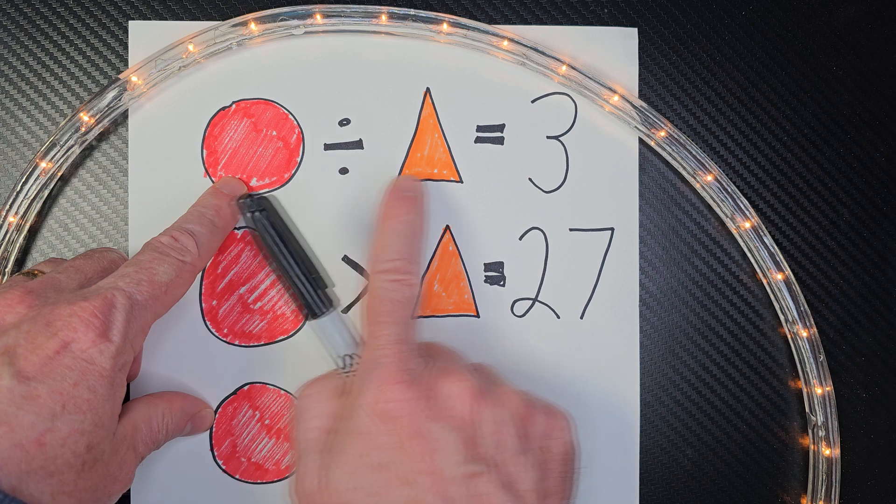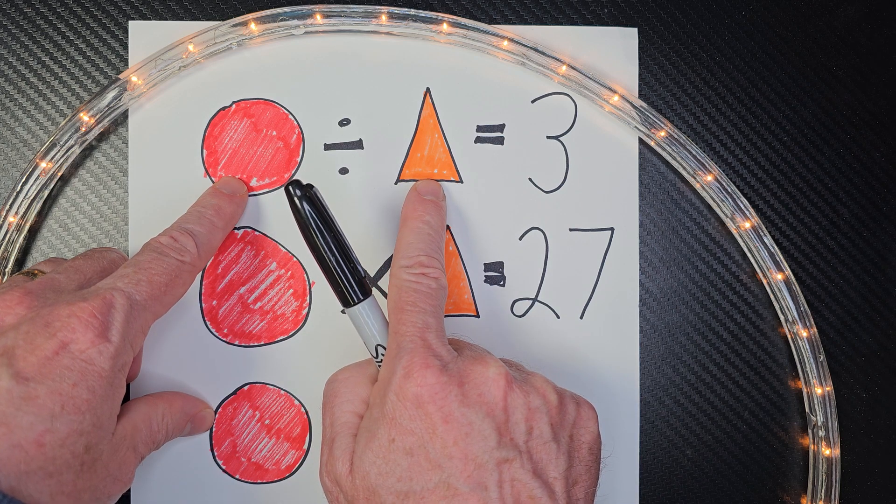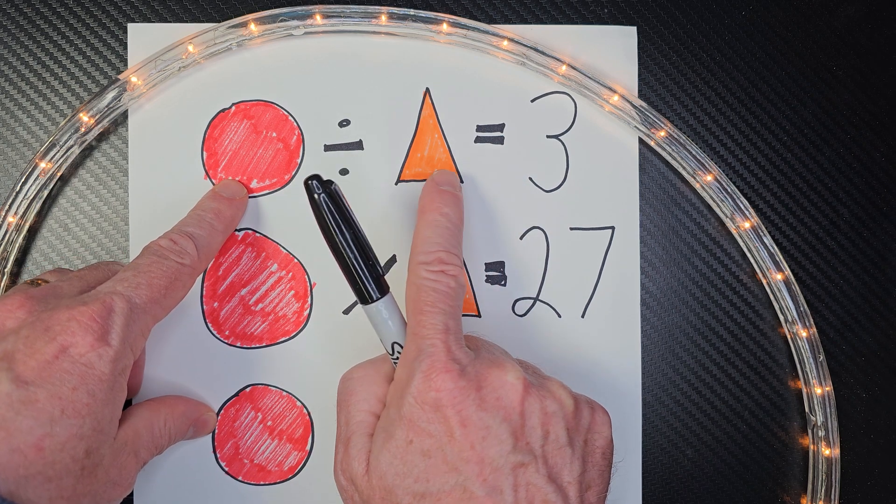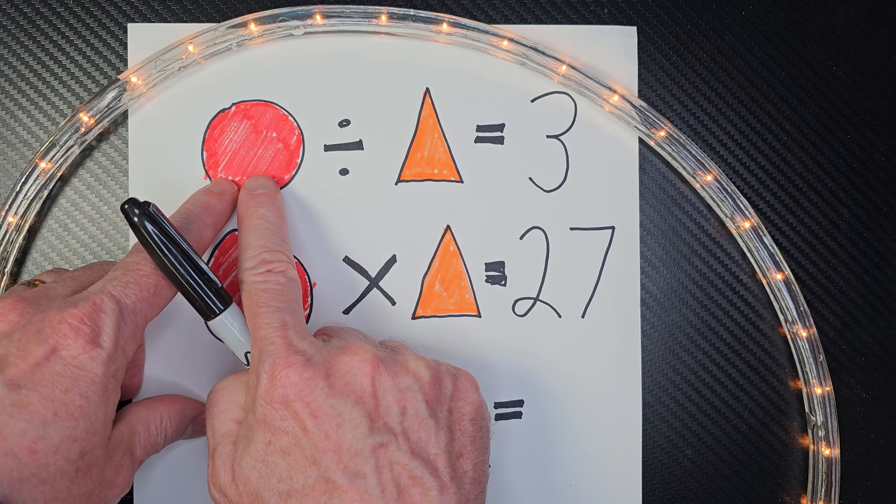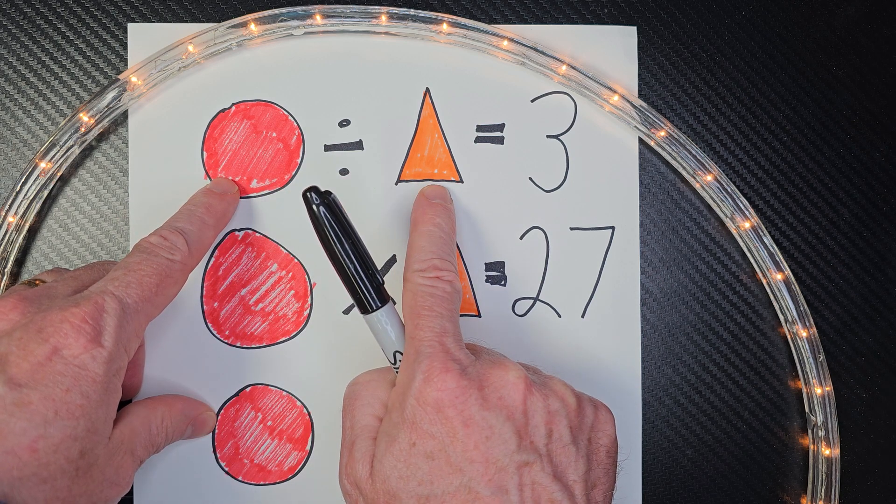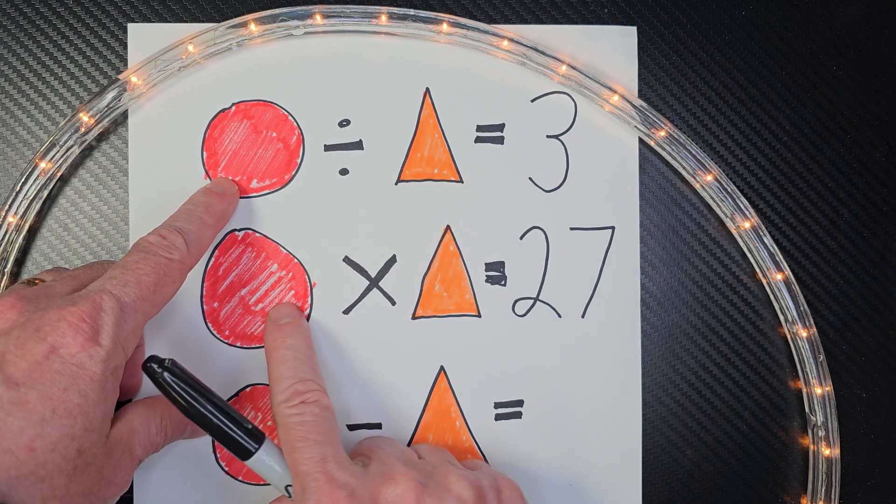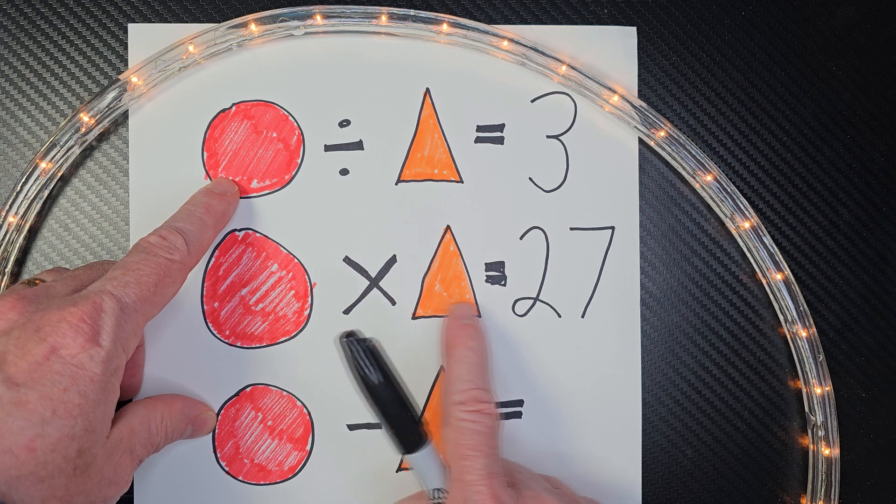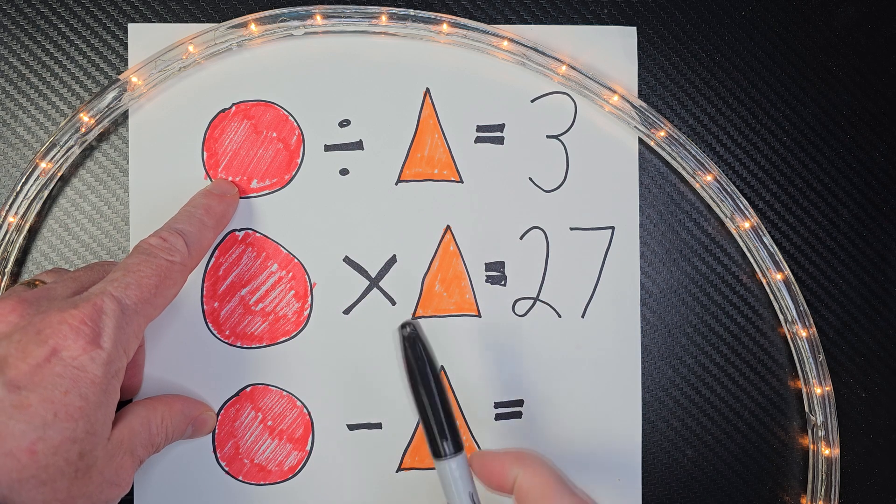So if I put 3 divided by 9, nope, it's not going to give me that one. So I need to switch it over and say 9 divided by 3 would equal 3, and 9 times 3 would equal 27. So I think that would work out.